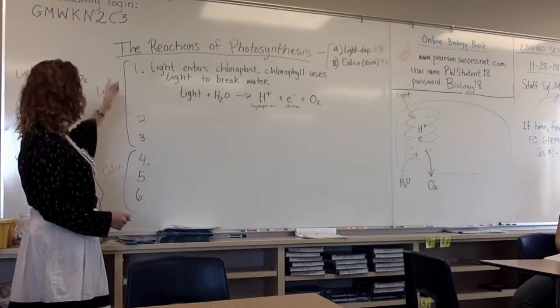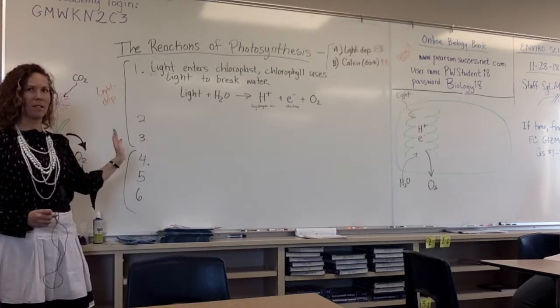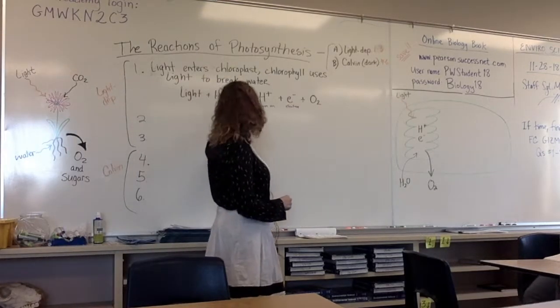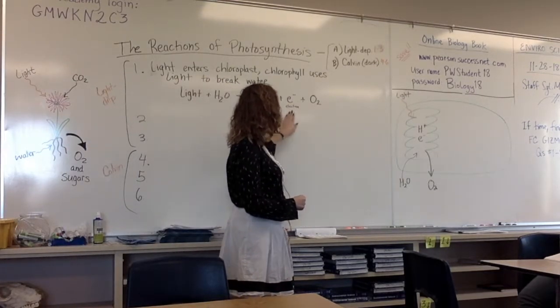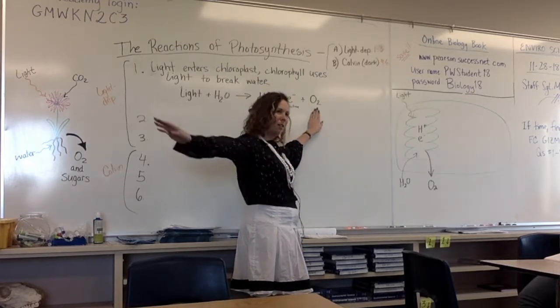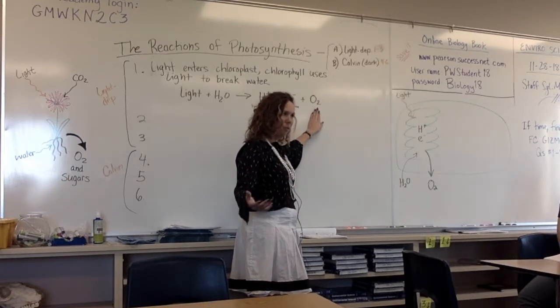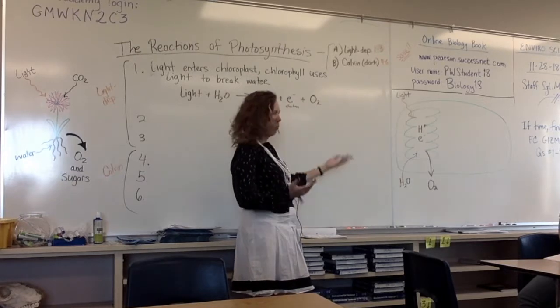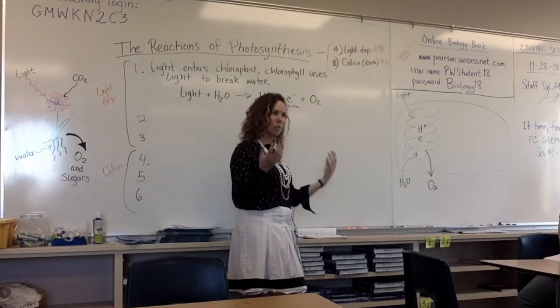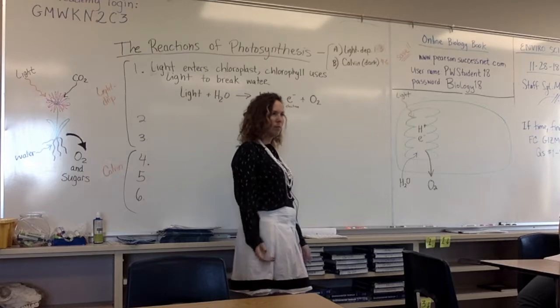Just to review, the first thing that happens in photosynthesis. This is light dependent. If there's no light, nothing can happen. So light comes in, breaks apart water into hydrogen ions, electrons, and oxygen diffuses out of the cell, out of the chloroplast, to be used by other animals. This is how we think probably animals evolved, is because plants were around first and produced this waste product of oxygen.